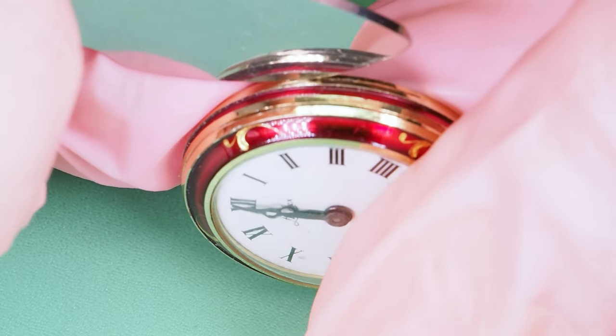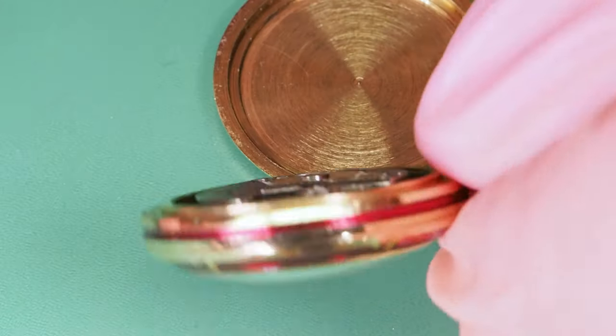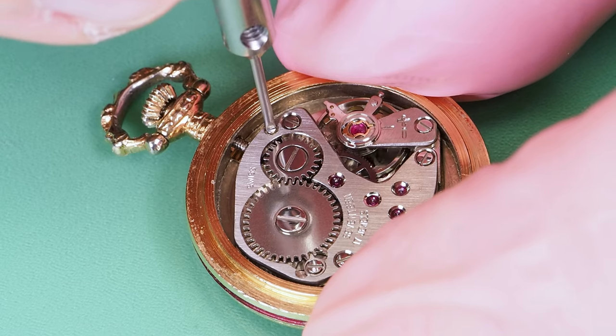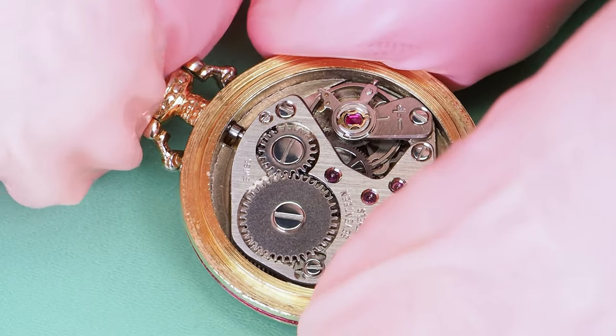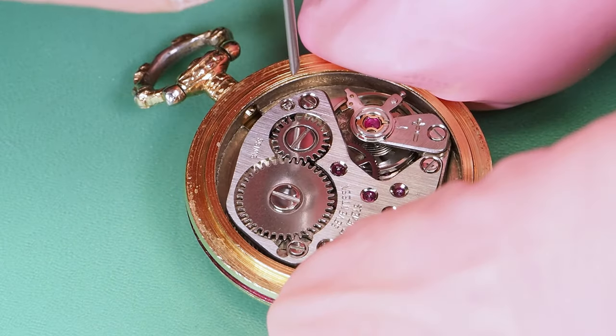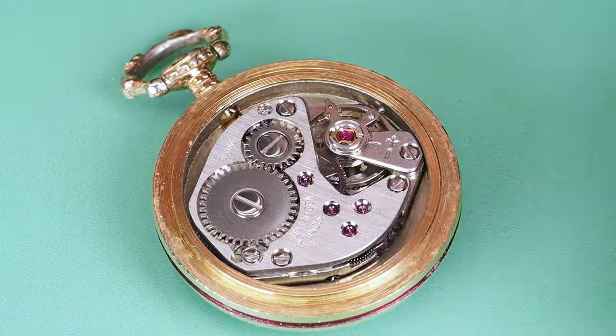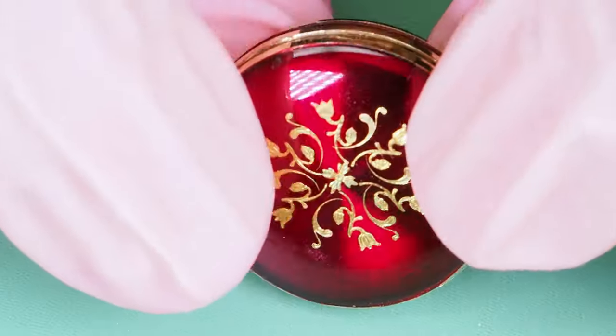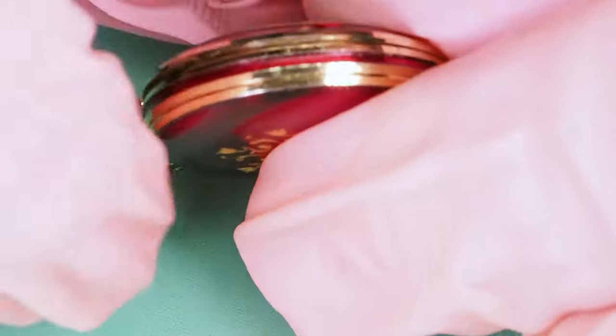I'll start with removing the case back so I can remove the crown and stem. I'll loosen the setting lever screw. The crown and stem can be removed now. And I'll secure the setting lever screw for now. I'll put the case back back on not to cause any damage while removing the hands. Now I can remove the front bezel so I can get to the hands.